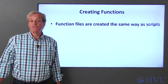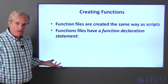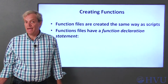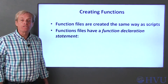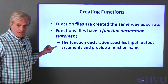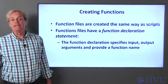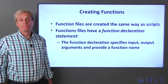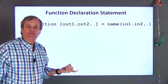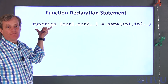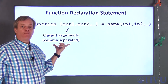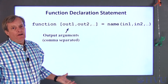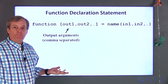Creating a function is pretty much the same as creating a script file — you still use Octave's editor. The only real difference is that the first executable command in a function must be a function declaration statement. The function declaration statement identifies the file as a function and lists the input and output arguments that the function will use. Part of declaring a function is providing the function a name. The function declaration statement has to start with the word 'function'. After the word 'function', the output arguments are listed within square brackets, separated by commas. If there is only one output argument, the square brackets are optional.